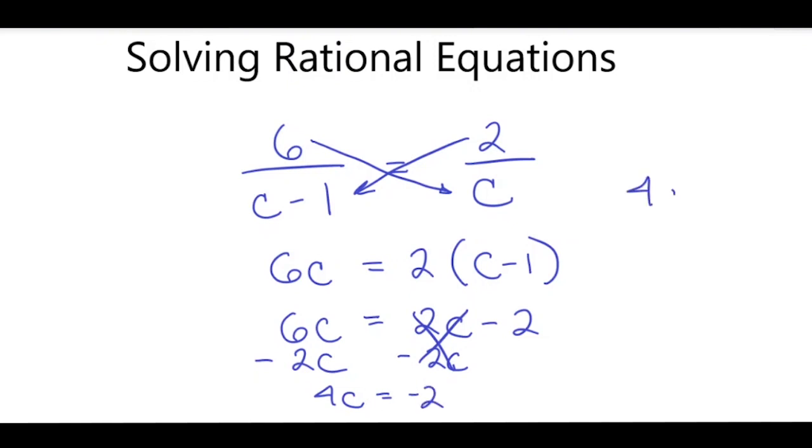I'll bring that over here. 4C equals negative 2. I'll divide both sides by 4, and I'm left with C equals negative 2 fourths. If I reduce that, that's negative 1 half.